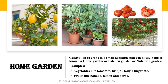Home garden: Cultivating crops in our home using a small available place or terrace is known as a home garden. It is also called a kitchen garden or nutrition garden. For example, we can plant saplings of vegetables like tomatoes, brinjal, lady's finger, etc.